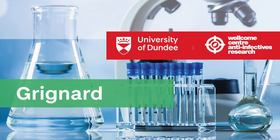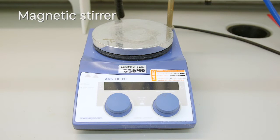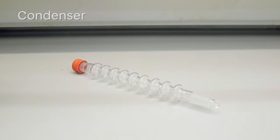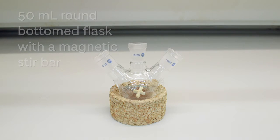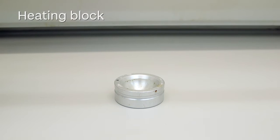We are going to go through how to make a Grignard directly from elemental magnesium turnings. We will need a magnetic stirrer, a condenser, a 50 mL round bottom flask with a magnetic stir bar, and a heating block.